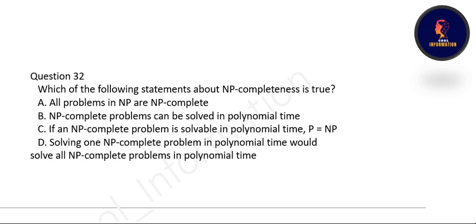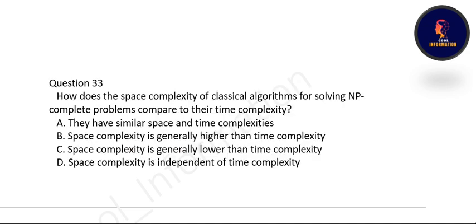Next question: which statement about NP completeness is true? The correct statement is option D: solving one NP complete problem in polynomial time would solve all NP complete problems in polynomial time. Next question: how does the space complexity of a classical algorithm for solving NP complete problems compare to the time complexity? Option B is correct: space complexity is generally higher than the time complexity.